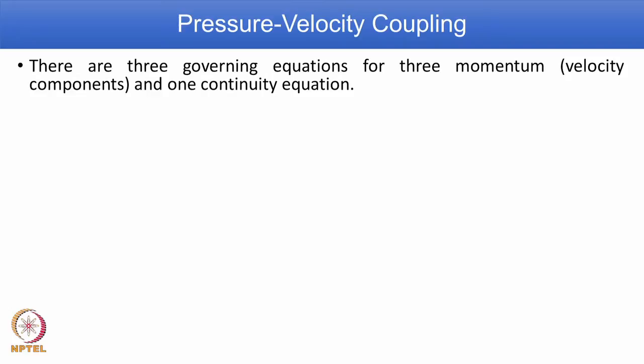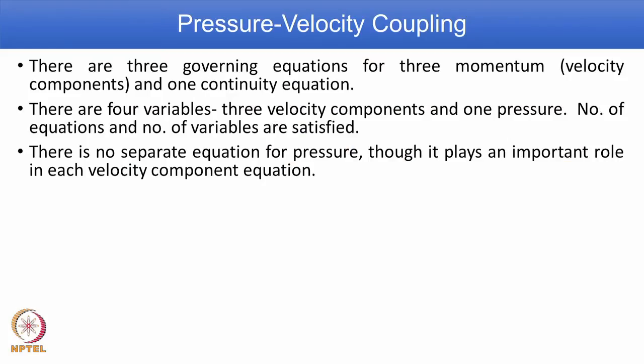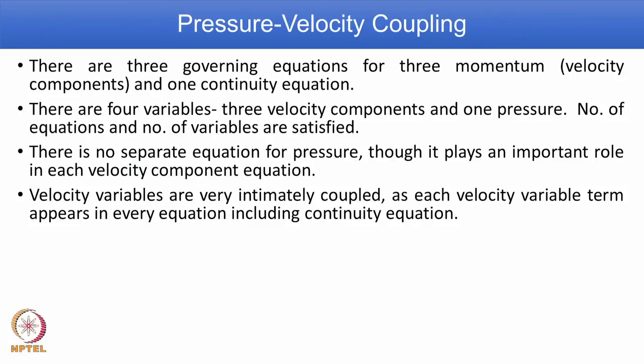We know there are 3 momentum equations for 3 velocity components and 1 continuity equation. Velocity terms appear in all 3 equations as well as the continuity equation. Pressure terms appear in all 3 momentum equations. There is no separate equation for pressure, though the pressure gradient term appears in all 3 momentum equations. You have 4 variables and 4 equations — number of equations equals number of variables. Velocity variables are coupled because each velocity term appears in every other equation, hence there is a strong coupling among velocity components.